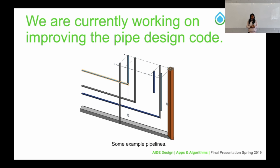We are also improving the pipe design code. Last semester we worked on a more object-oriented approach, and now we want to improve upon that by chaining pipes together, for example using doubly linked lists. Pipes are realistically chained together, and we want to reflect this in the code so we can work on the entire pipeline rather than individual pipes. Working on the entire pipeline makes it much easier to calculate head loss or velocity of water through the pipes. Improving the pipe design code will also help design the filter and allow integration with the template team's pipe library in Onshape.